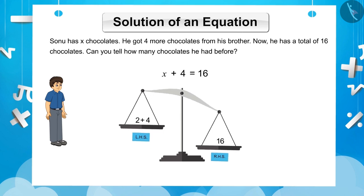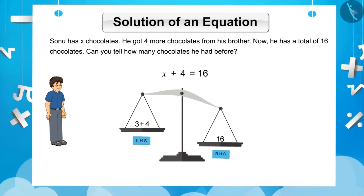Let us put 1, 2, 3, etc. in the place of X. As you can see, LHS and RHS are not equal in these situations. This means, none of these is the correct value for X.